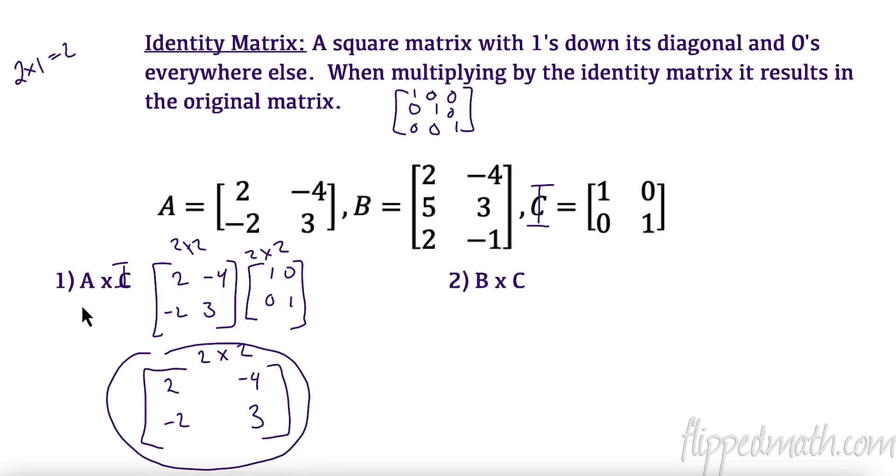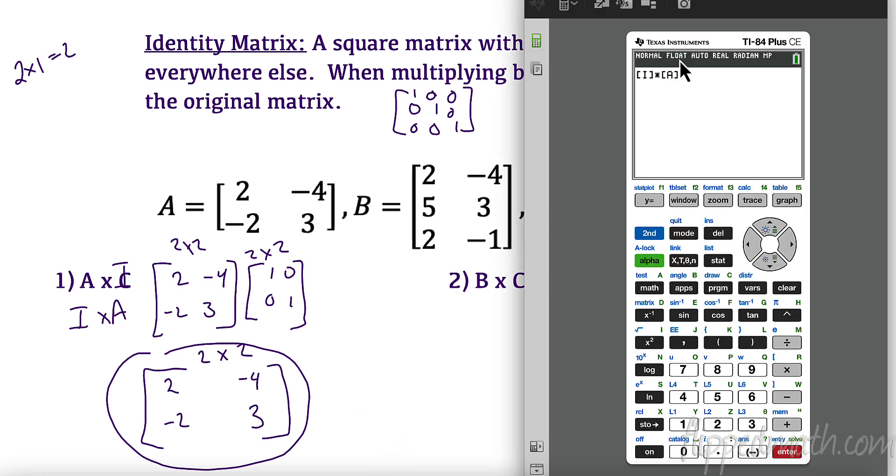Now, we multiplied A times my identity. What happens if I multiply my identity matrix by A? Does it matter? That's the commutative property, right? Well, let's take a look. So, I already put this in here. I have A times, or I, my identity times A. And, if you'll notice, we get the same thing back, which is great. And what we hoped for, right?